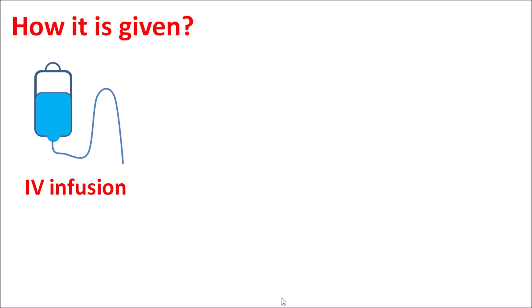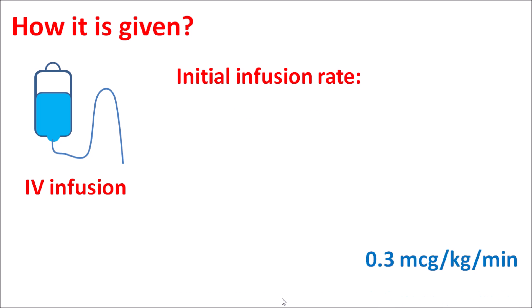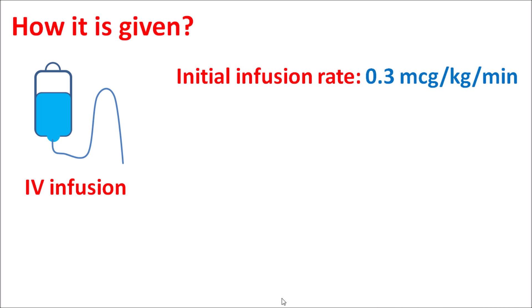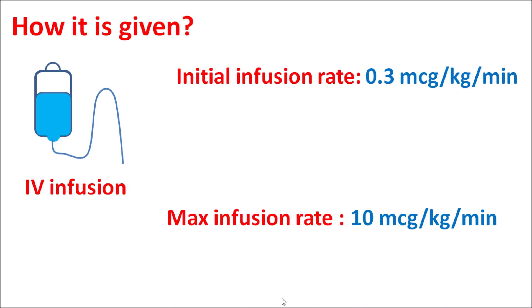Regarding dosing: this drug is given by IV infusion. Initially it is given at a low infusion rate of 0.3 micrograms per kg per minute, and after 5 minutes hypotension is checked. If sufficient hypotension has not been produced, the infusion rate can be increased, up to a maximum of 10 micrograms per kg per minute. During infusion, severe hypotension must be closely monitored, as it reduces perfusion pressure to vital organs.